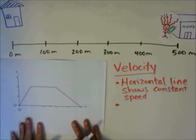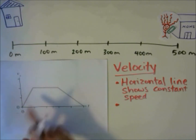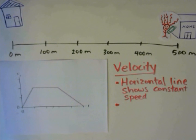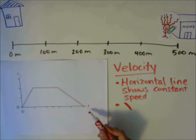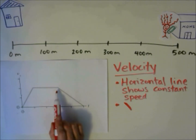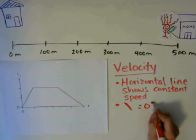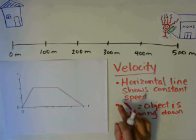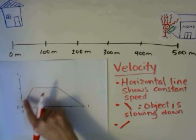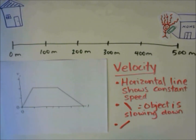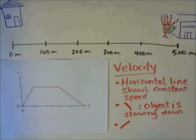Let's look at a different velocity-time graph. In this graph, we sometimes have a constant velocity but not always. A section with a downward slope — like a backslash — means the velocity is decreasing, so the object is slowing down. We also have sections where the velocity goes from 0 up to about 2 meters per second — it is increasing. When you have a forward slash shape, that means the object is speeding up.